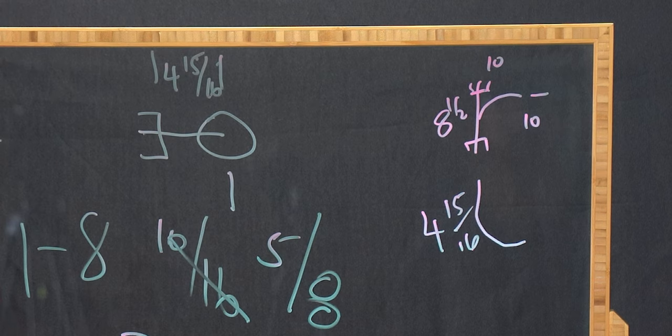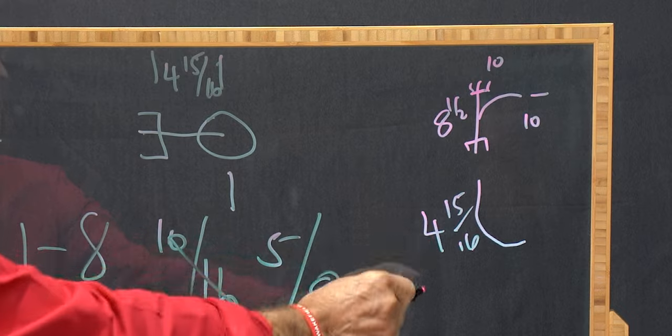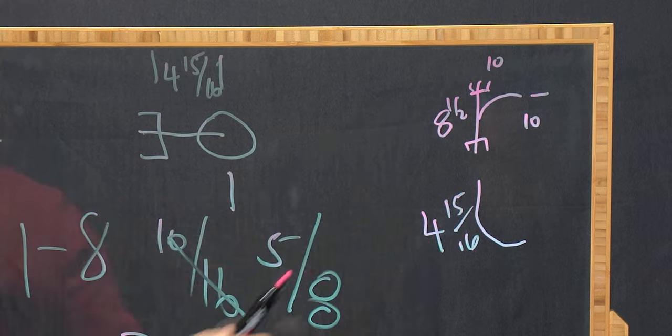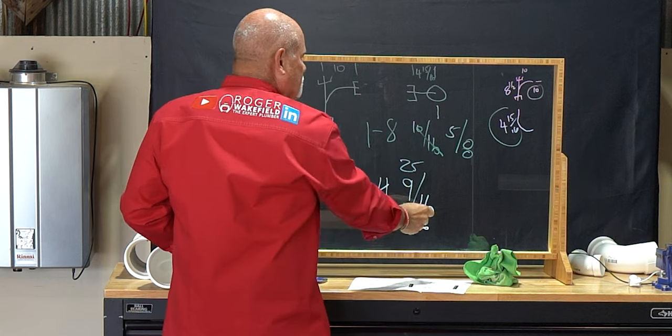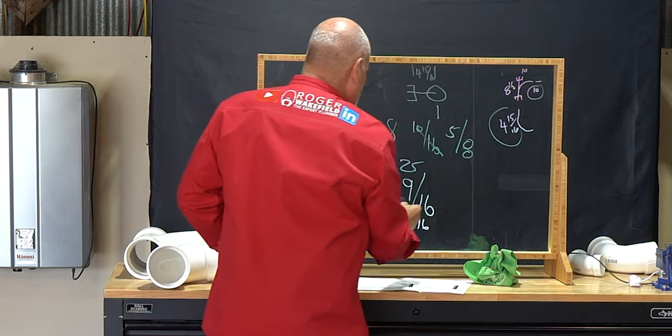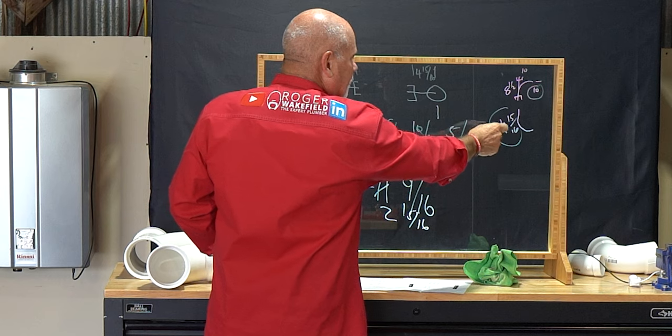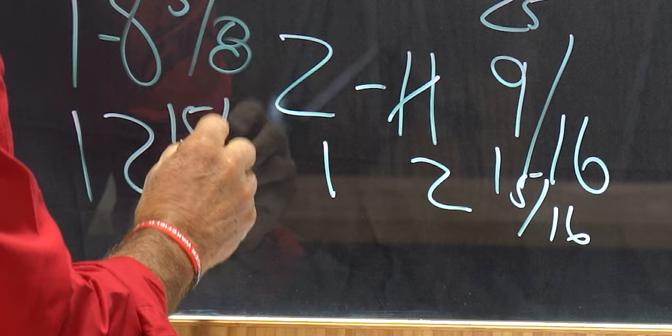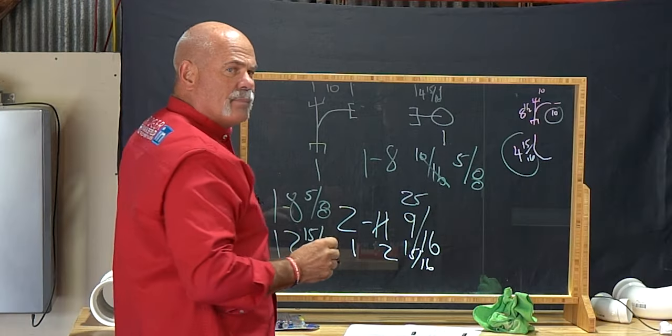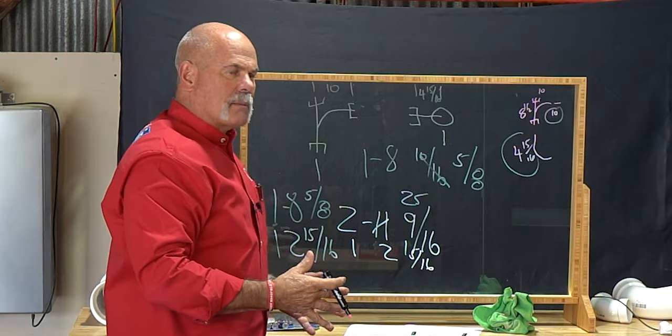Then you're going to add in basically your one foot two and 15 sixteenths, which is what you get right here. I'm going to take my 10 inches, my four and five sixteenths, or four and 15 sixteenths, which is right here, 10, one foot two and 15 sixteenths. I'm going to add this back to this. All I'm doing is double checking my math.